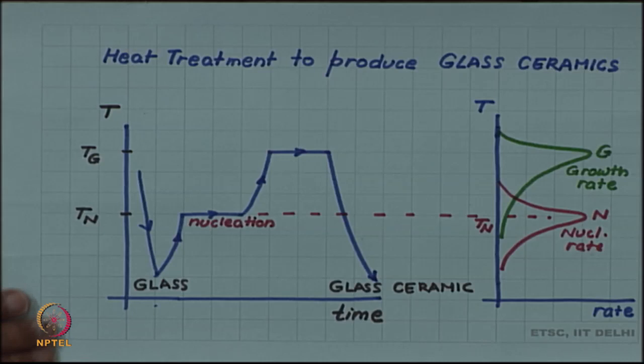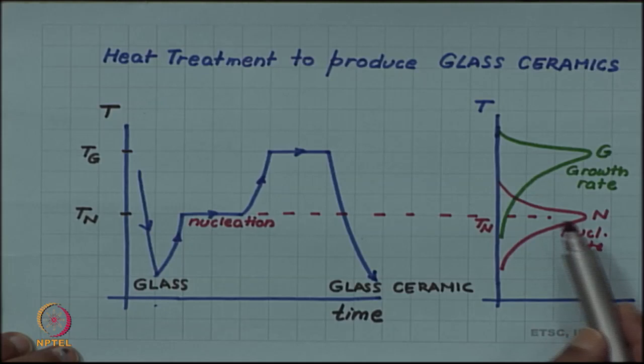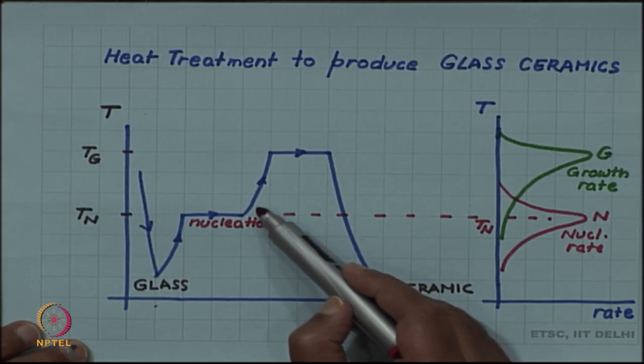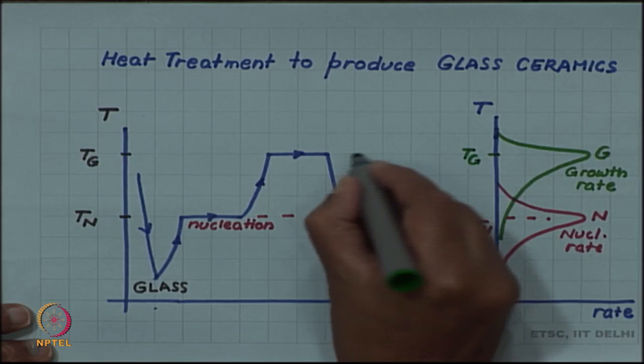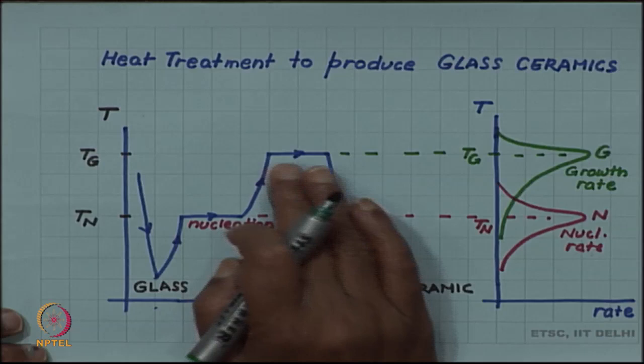However, if we continue at this temperature, the growth rate is very slow and the time required for formation of significant amount of crystal will be very large. That is why a jump in temperature is given after sufficient number of nuclei are formed. Temperature is raised to a value TG, which is the temperature at which the growth rate is maximum. Thus whatever nuclei are formed at TN now start growing at a faster rate.